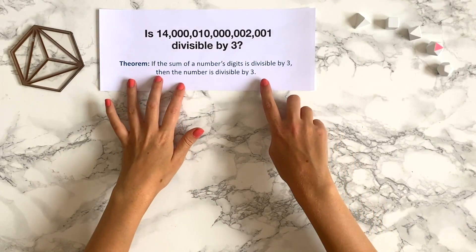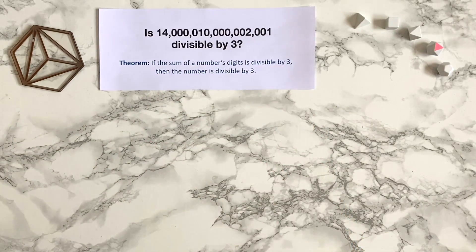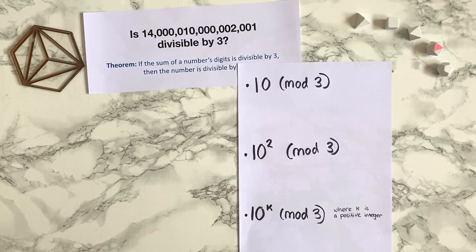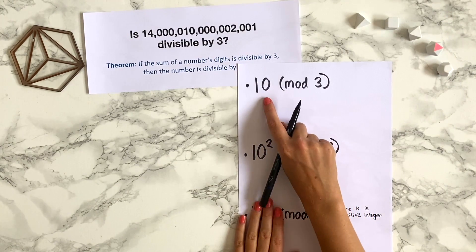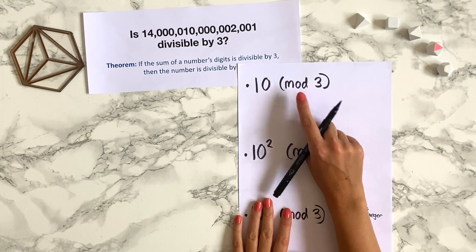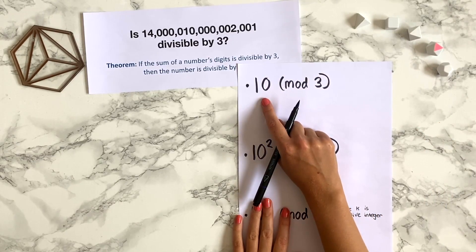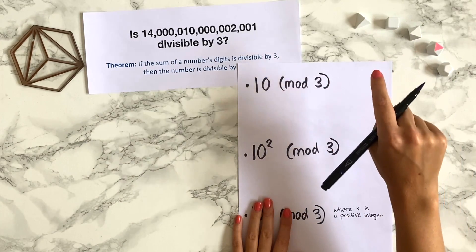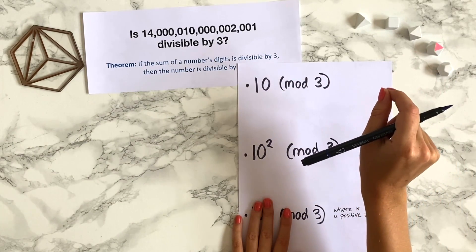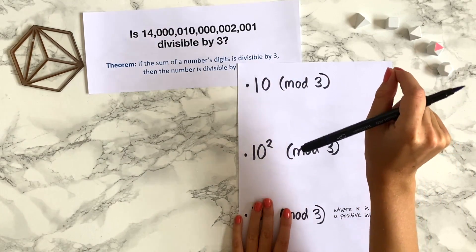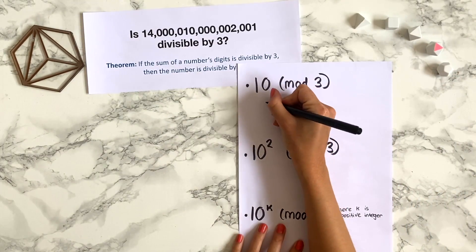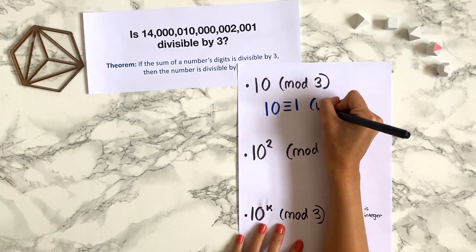Before we set about proving this theorem, there are a couple of things I want to think about first. I want to think about what happens when you take powers of 10 modulo 3. Let's start with just 10 modulo 3. If you're imagining a 3-hour clock, 9 is divisible by 3, so 9 would appear at the top of the 3-hour clock. To get to 10, you just jump 1 hour further, so 10 would be at 1 o'clock, or 10 is congruent to 1 modulo 3.